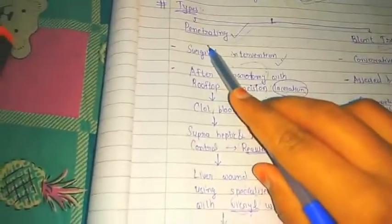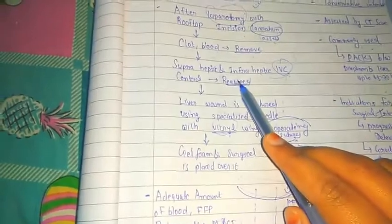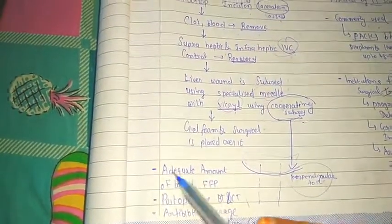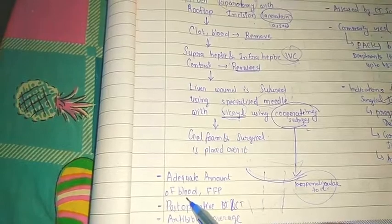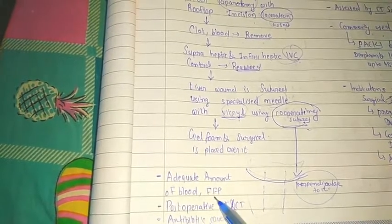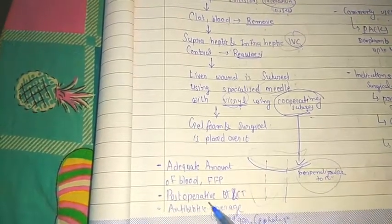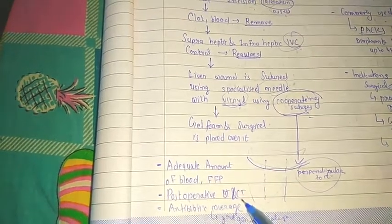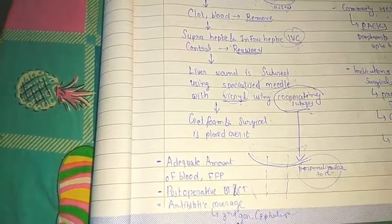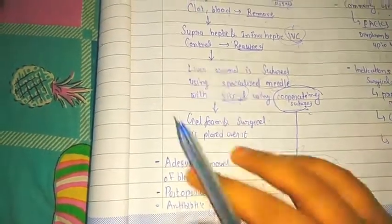In penetrating injury, after all this, we should do an adequate amount of blood transfusion, fresh frozen plasma transfusion, and post-operative coagulation parameters are all measured. Antibiotic coverage with third-generation cephalosporin is a must.